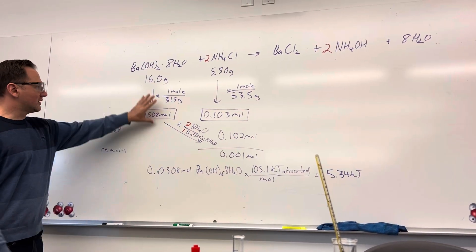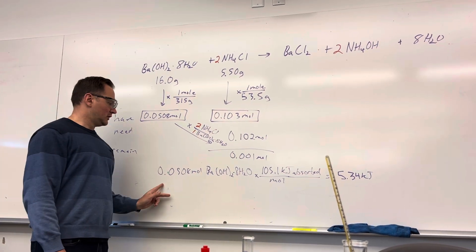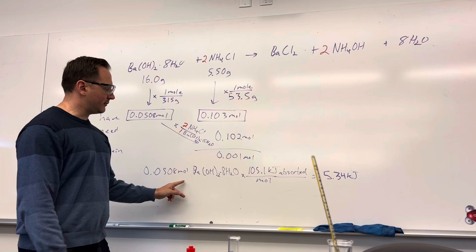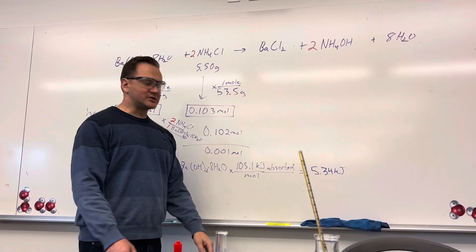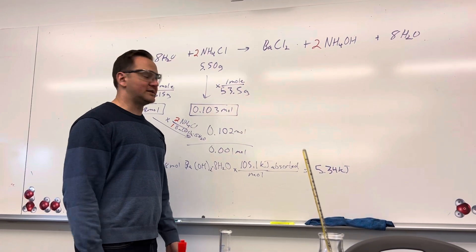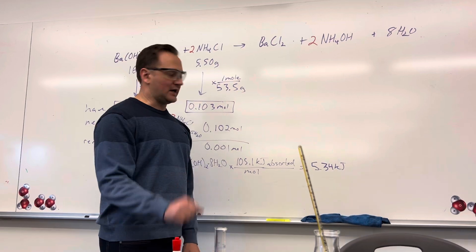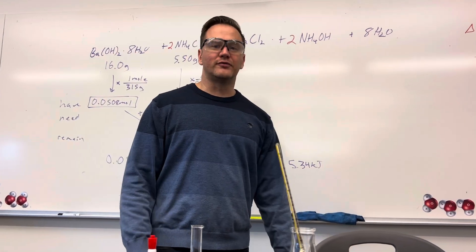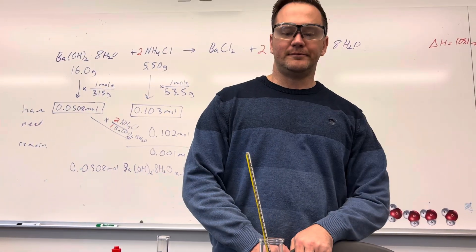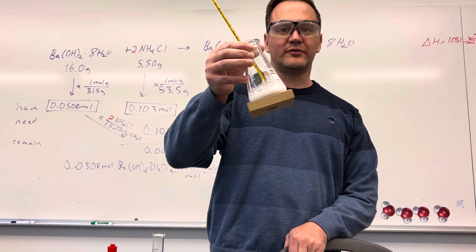Now knowing that we're going to use all of the barium hydroxide in this reaction, we can take that value of 0.0508 moles of barium hydroxide octahydrate, multiply it by the delta H of the reaction, and you get that this reaction absorbed 5.34 kilojoules of energy and froze the wooden block to the Erlenmeyer flask.